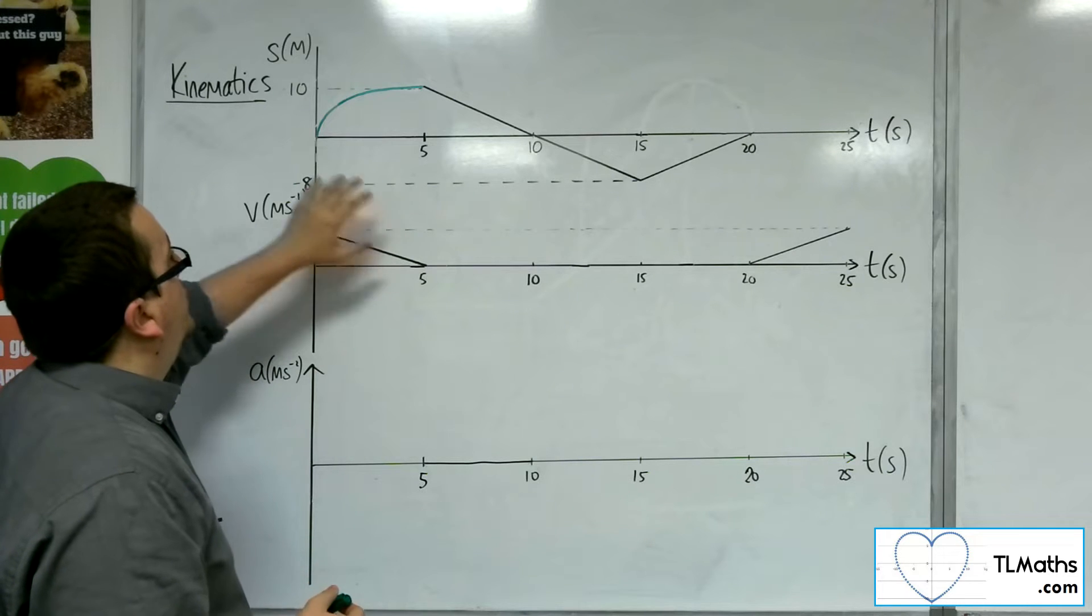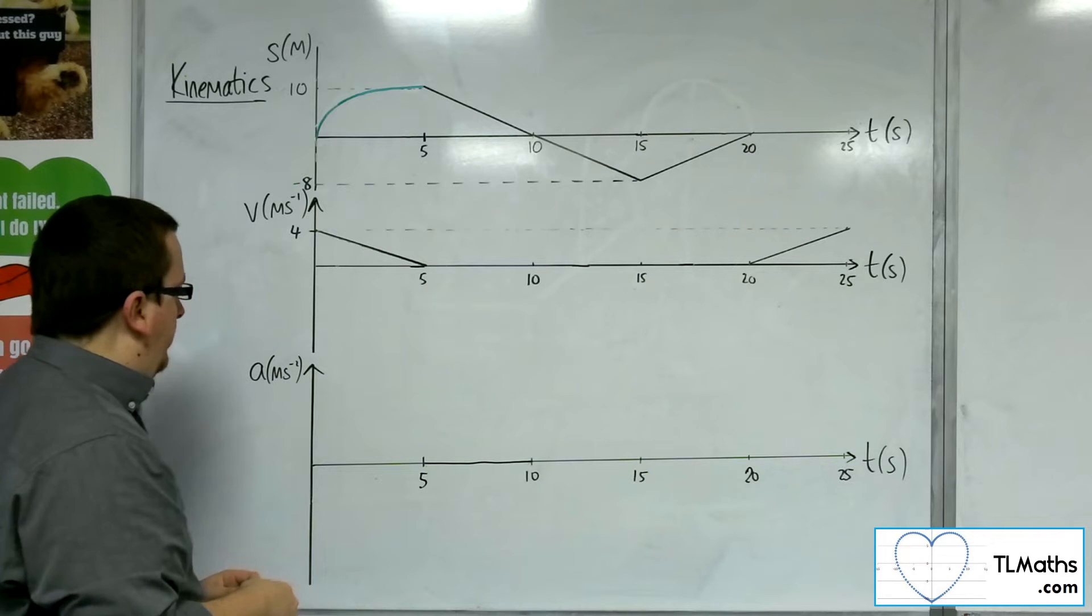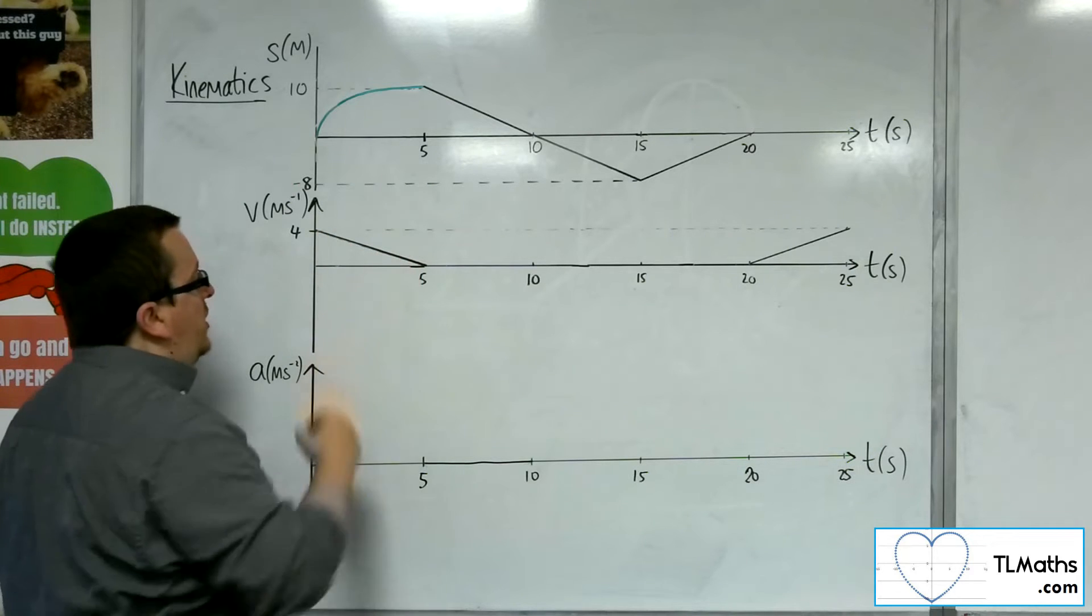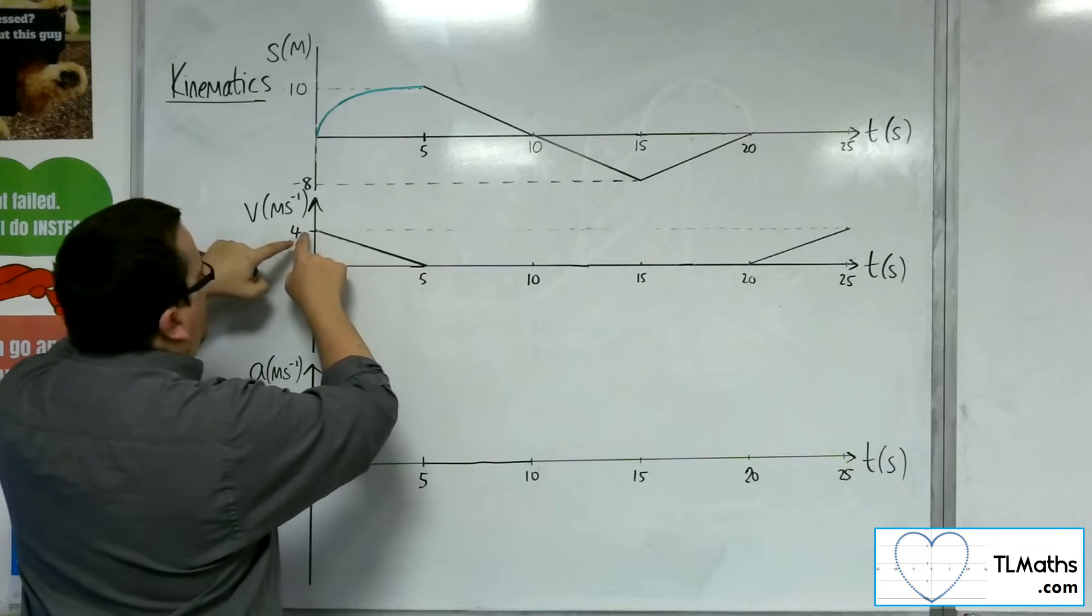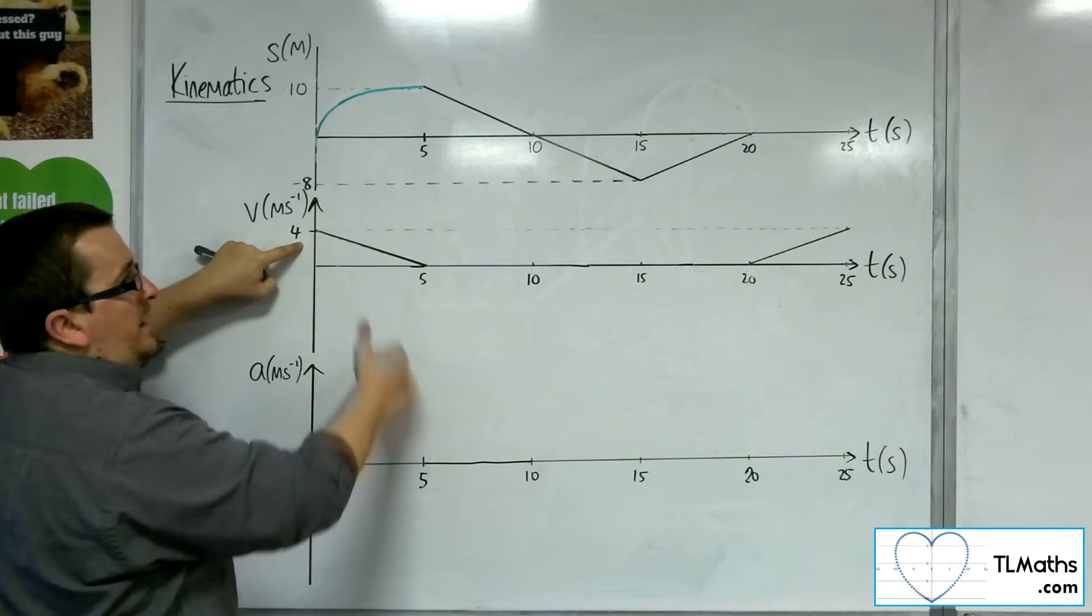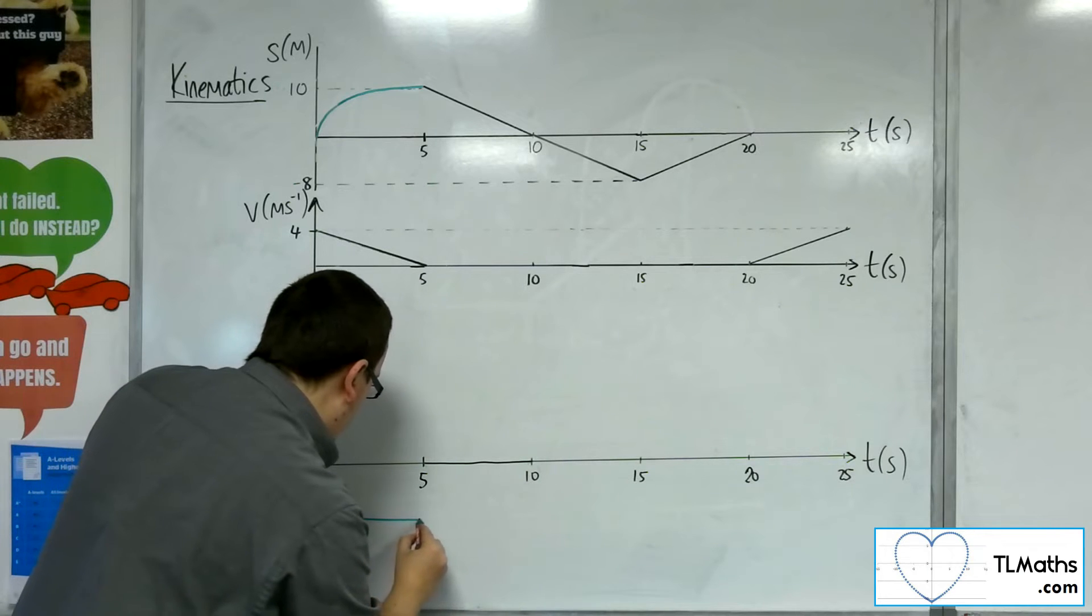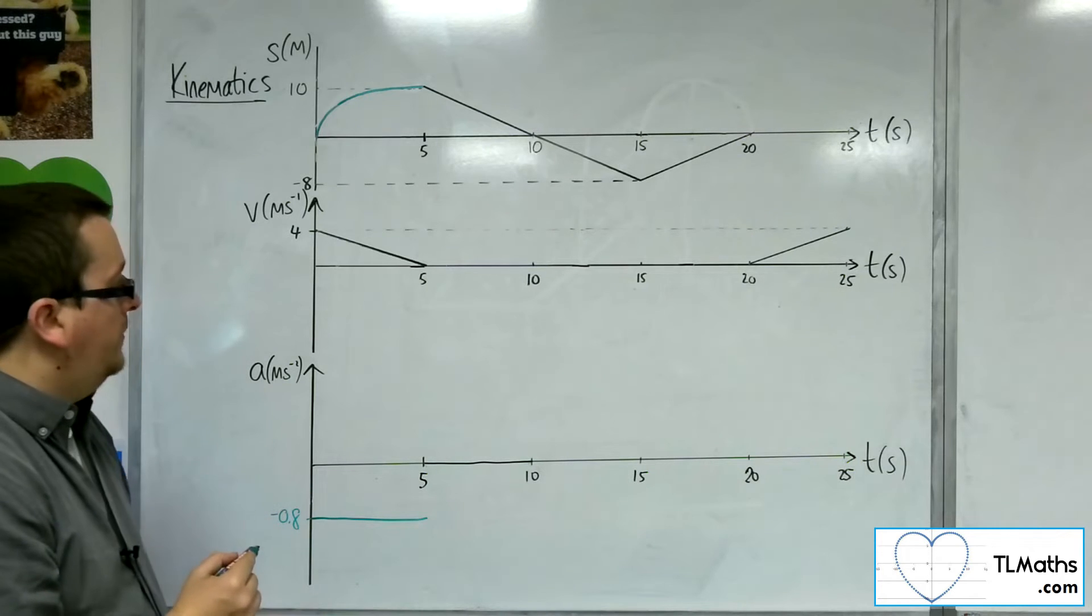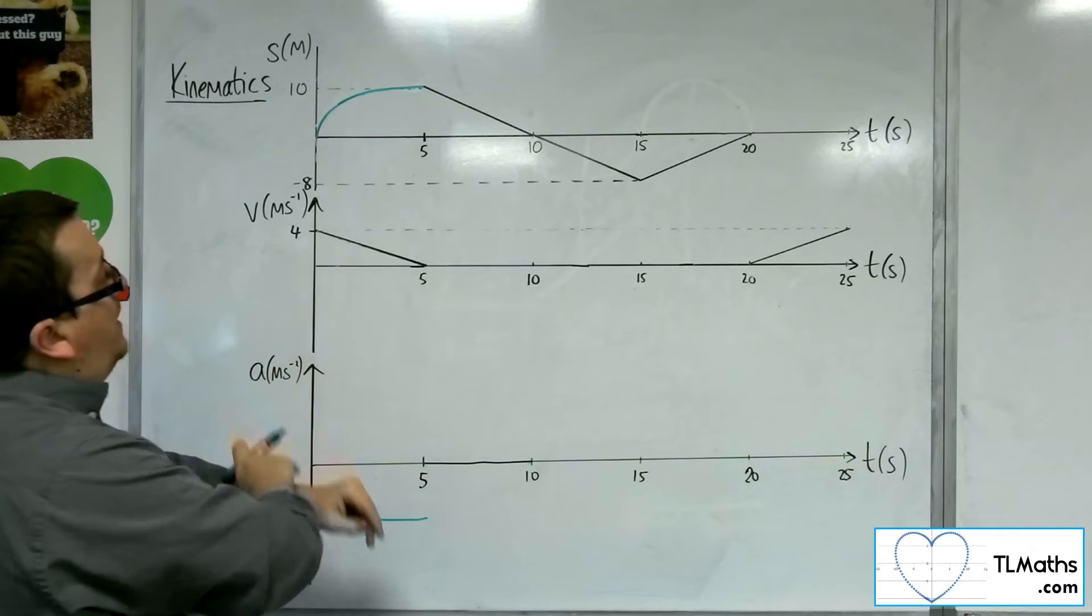The area of that triangle is telling you how far we've actually traveled in those first 5 seconds. So the acceleration—what would be the acceleration? The acceleration is the gradient of that line. So if I'm looking at the gradient of that line, we've got minus 4 divided by 5, so minus 0.8. It's got a negative gradient, so we're going to be at minus 0.8 all the way between 0 and 5. So it would be a horizontal line.